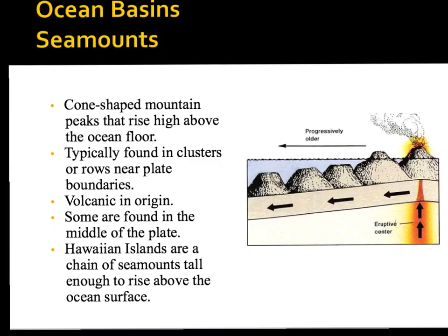You can also encounter sea mounts, or sea mountains — cone-shaped mountain peaks that rise high above the ocean floor. Sea mount makes sense: mountains in the sea. They're typically found in clusters or rows near plate boundaries. They start out volcanic, but like the Hawaiian Islands and hot spots, a sea mount can lose its hot spot as the plate moves over the hot spot.